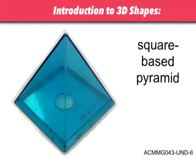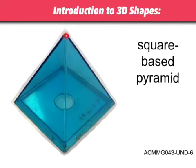Introduction to 3D shapes — a square-based pyramid. Pyramids are different to prisms. We talked about prisms having a base and a top that are the same exact shape. In a pyramid, you have a shape that's the base — in this case it's a square — but then all of the other faces join up to a point. All the faces on the sides join up together at the top to make a point.